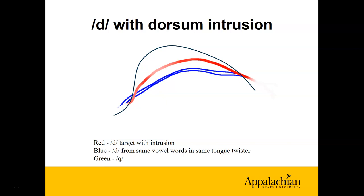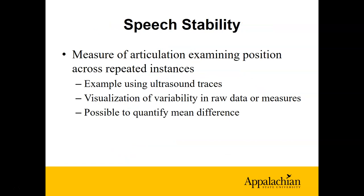One of the nice things about looking at articulation is we can see things you can't hear. In this example, in blue we have two repetitions of a 'duh' sound showing typical posture — the tongue dorsum is not real high, and the front of the tongue points slightly upward. In green I have a 'guh' in the same vowel context. In red we have a production of a 'duh' from the tongue twister where the tongue blade up front does end up where it's supposed to, but the tongue body in the middle appears abnormally raised — not raised enough to make a closure and produce a speech error we could hear, but an unintended intrusion of 'guh' production onto the 'duh'. Finding things like this is the point of phonetics — we can see or measure things that we can't just hear with the ear.